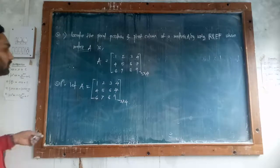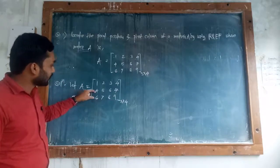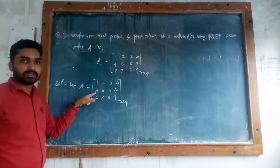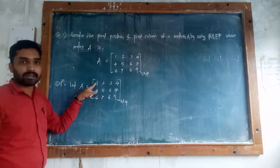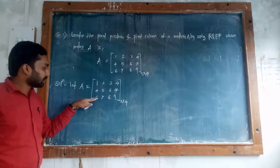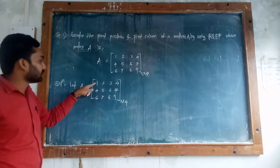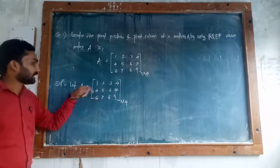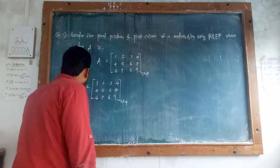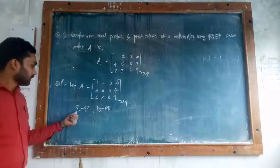Now I will apply row transformation. We have to build this matrix into the upper triangular matrix, which means we have to make certain entries zero. So how to make that entry zero — in the second row the leading element is 4. If we multiply the first row by minus 4, then 4 plus minus 4 becomes 0. In the third row the leading element is 6, so if we multiply the first row by minus 6, then 6 minus 6 is 0.